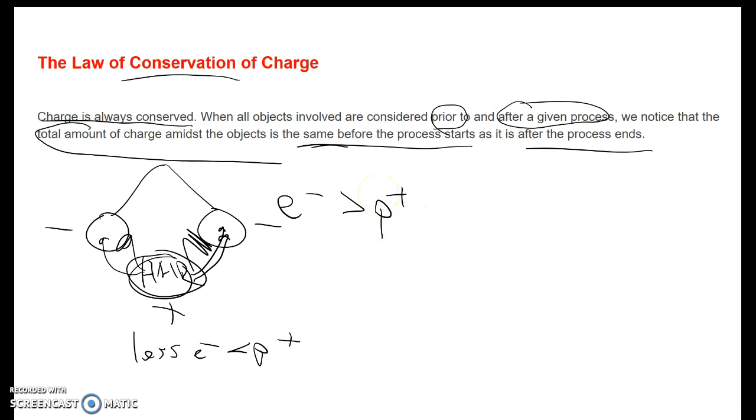The balloons become negative because the number of electrons is greater than their number of protons. But the total charge, total number of electrons and protons, is the same before we start as it is after we're done. The total number of electrons stays the same, they just switch places. They go from the hair to the balloon, which makes the balloons negative and the hair positive.